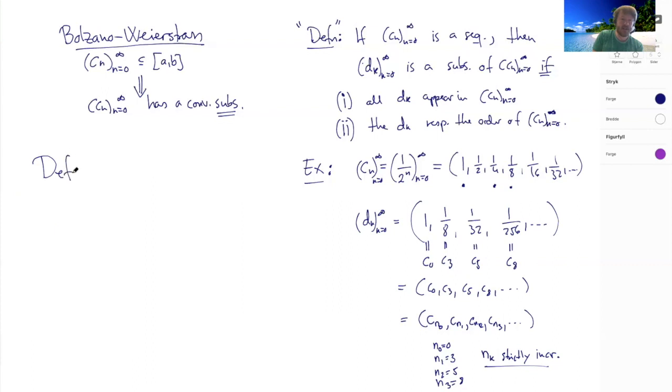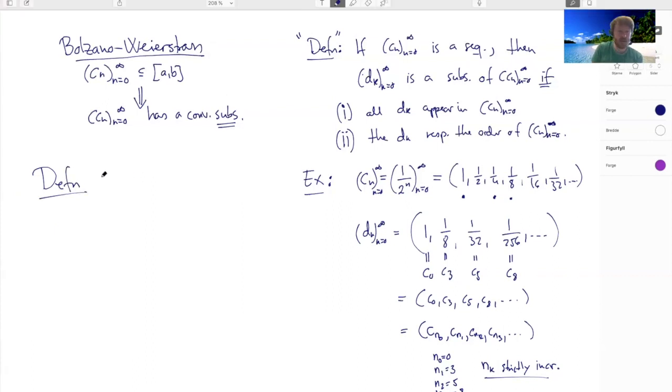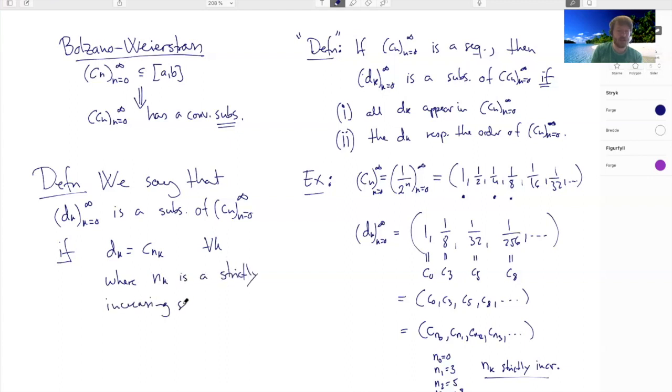As a proper definition of a subsequence, I can say the following: we say that Dk, k goes from 0 to infinity, is a subsequence of Cn if the Dk are equal to Cnk for all k, where nk is a strictly increasing sequence of natural numbers. Because then every Dk is a member of the original sequence, and since these Nk's are strictly increasing, the Dk's respect the order.